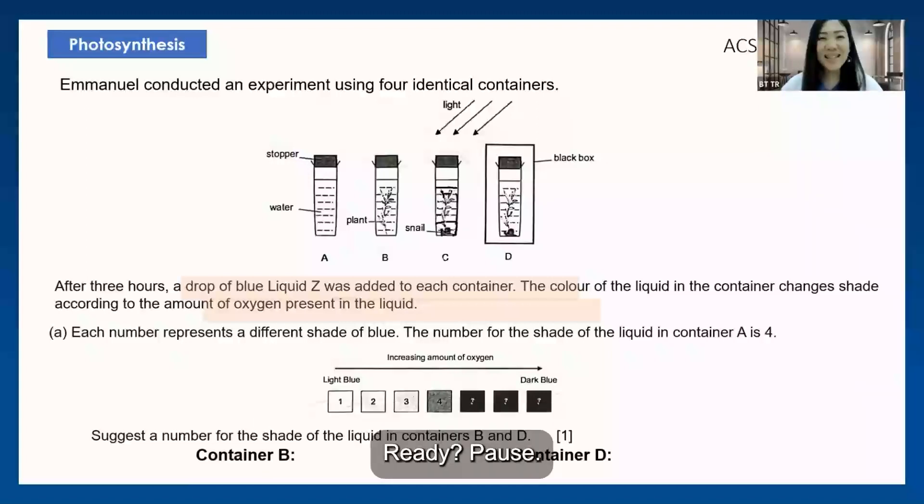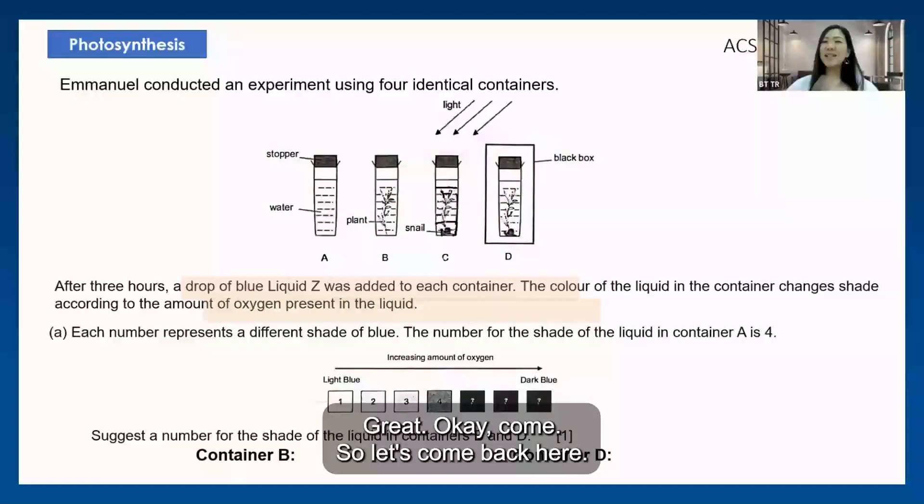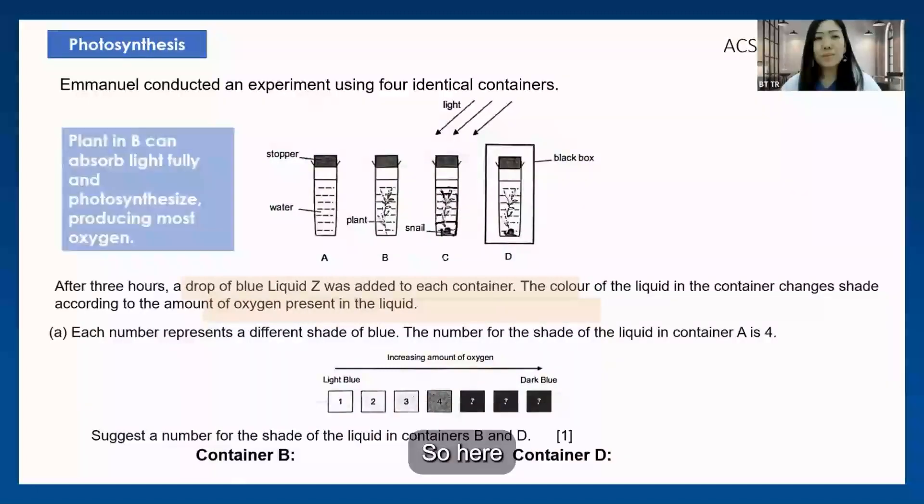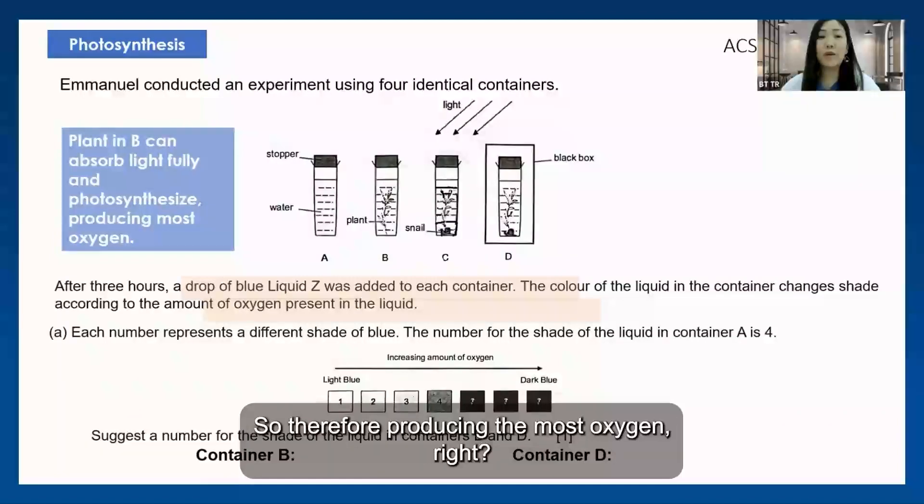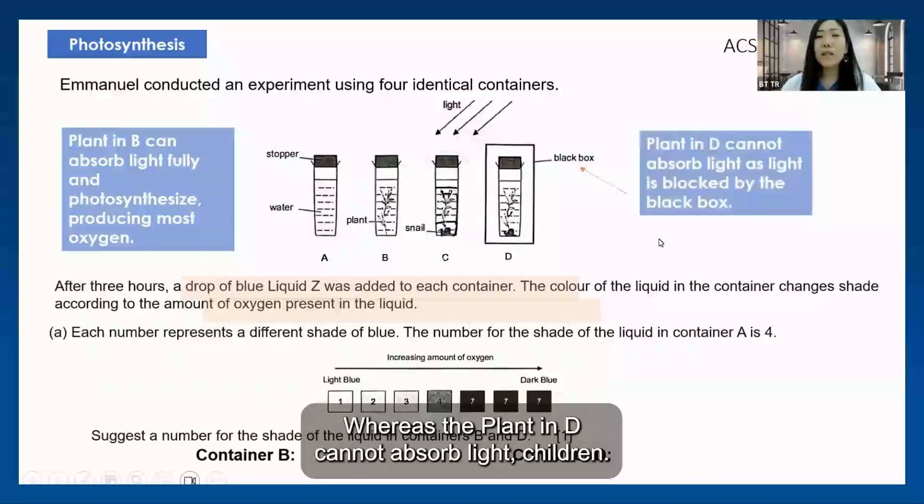Okay, let's come back here. I can see that the plant in B can actually absorb the light fully and photosynthesize, therefore producing the most oxygen.